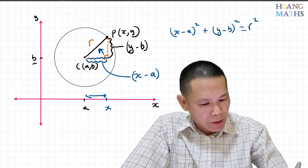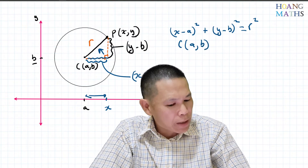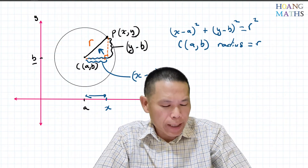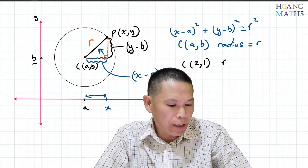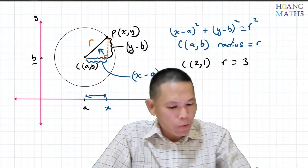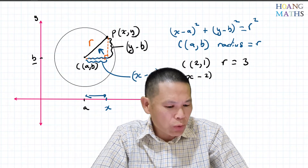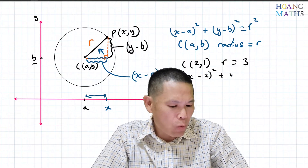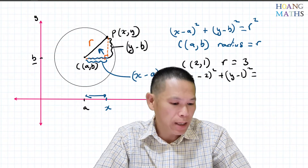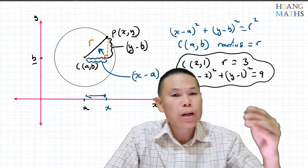So the center is (a, b) and the radius is r. For example, if the center of a circle is (2, 1) and the radius is 3, then the equation is (x minus 2) squared plus (y minus 1) squared equals r squared, which is 3 squared, which equals 9.